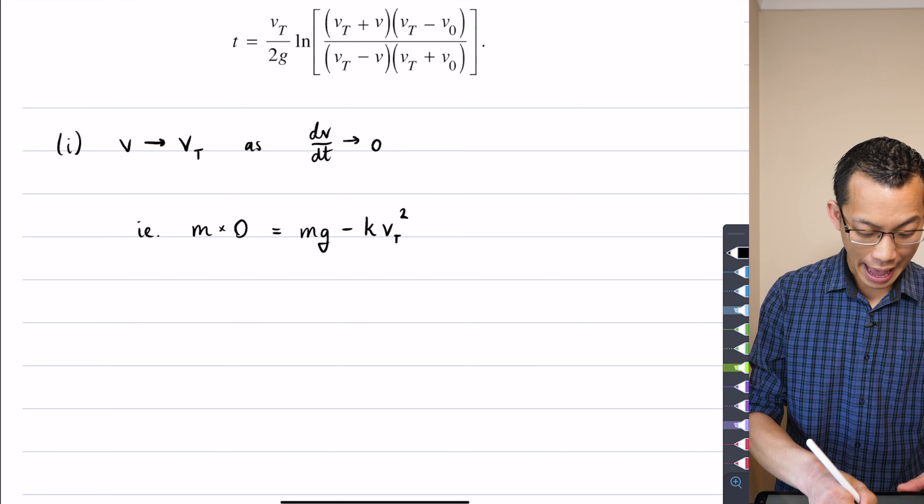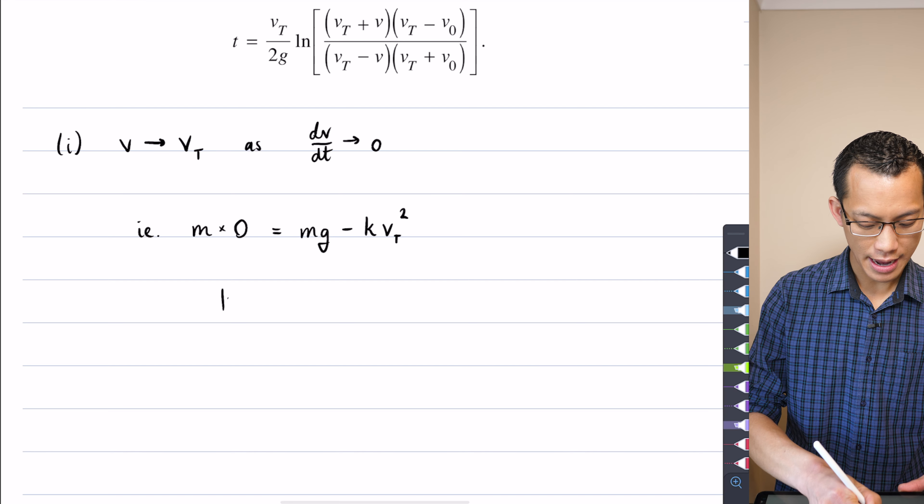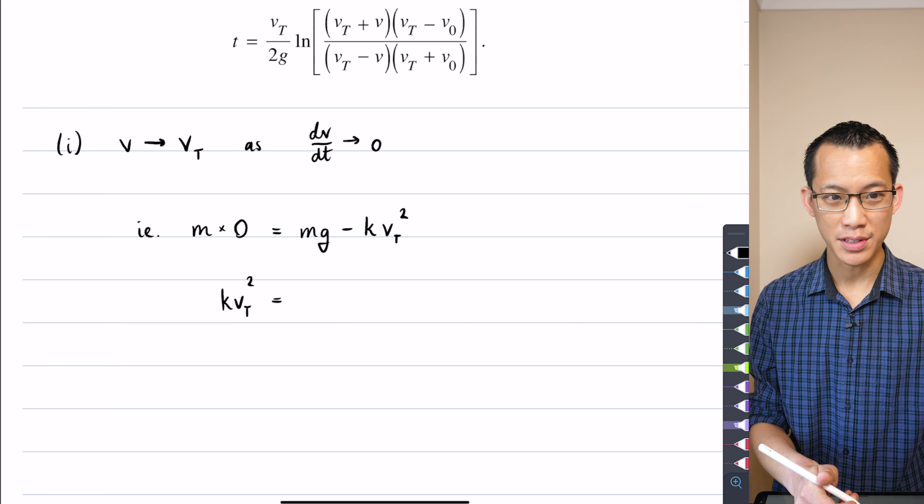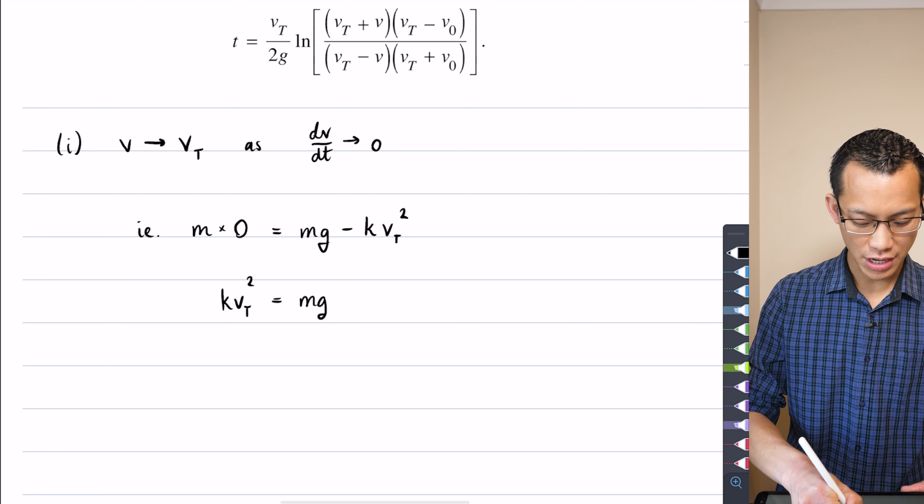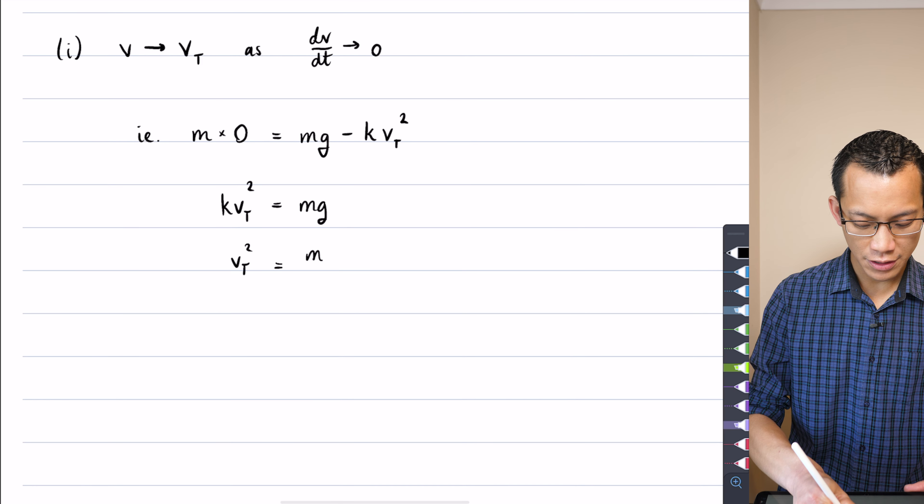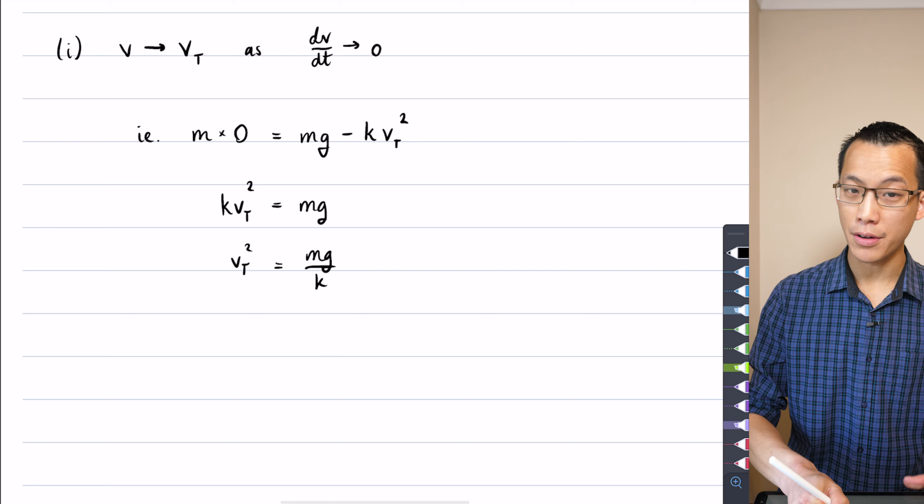I will add the KVT squared to both sides, that left-hand side is zero because M times zero, you just get that MG on the right. I'll divide through by K, which gives me the MG on K, which you can see appearing in that result.